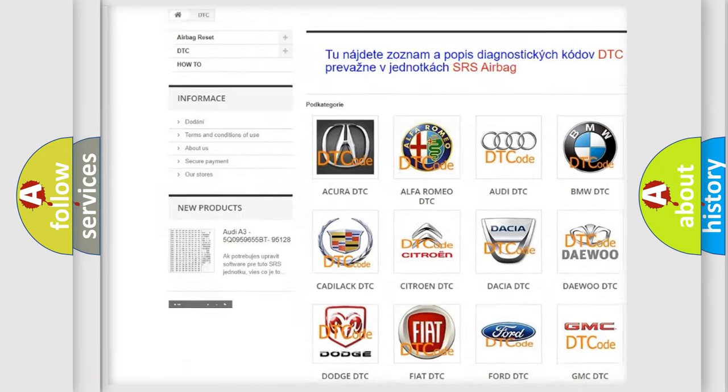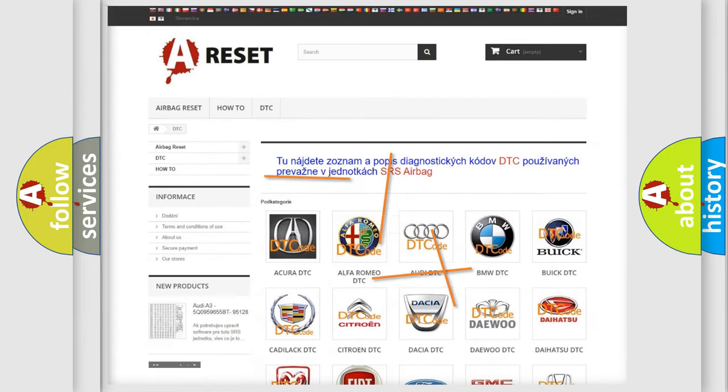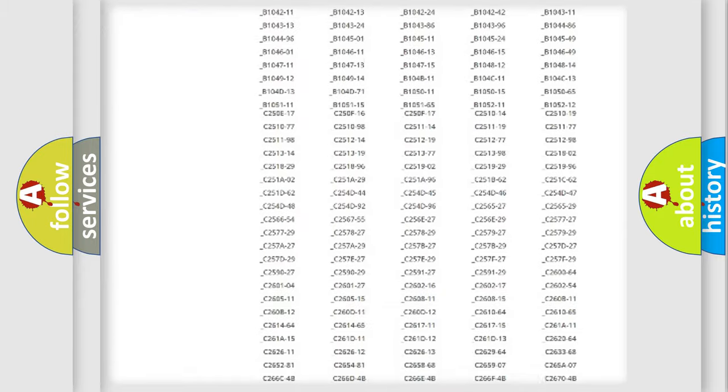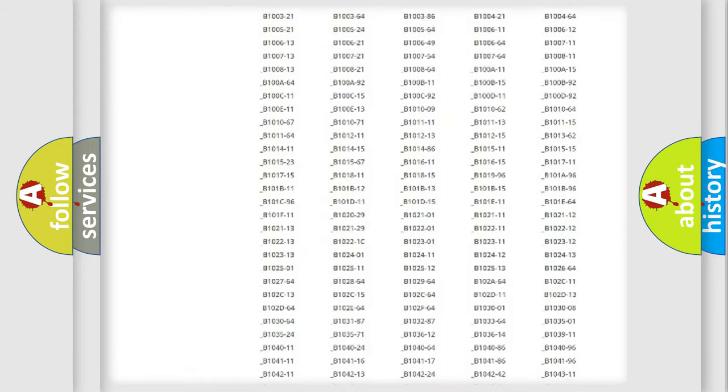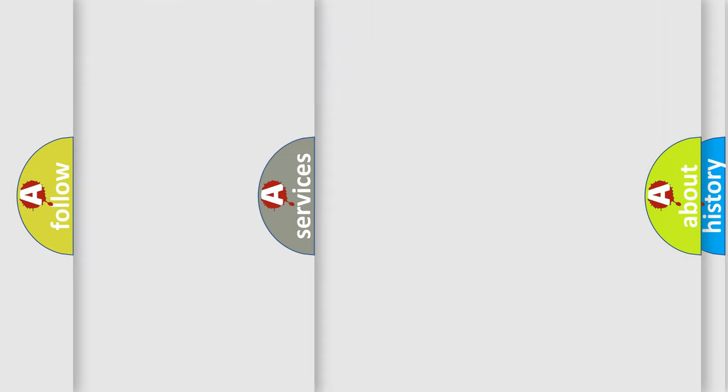Our website airbagreset.sk produces useful videos for you. You do not have to go through the OBD2 protocol anymore to know how to troubleshoot any car breakdown. You will find all the diagnostic codes that can be diagnosed in Alfa Romeo vehicles, and also many other useful things.